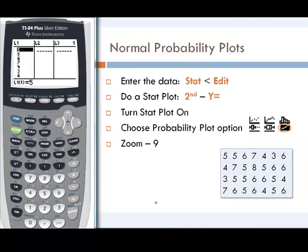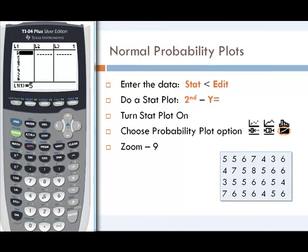Our data set is over here. We've got 5, 5, 6, 7, so we would enter 5, 5, 6, and we would just keep going like that.